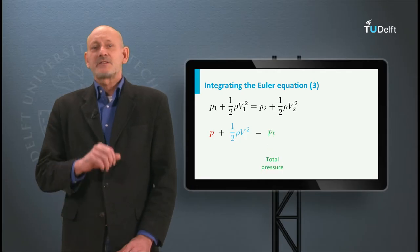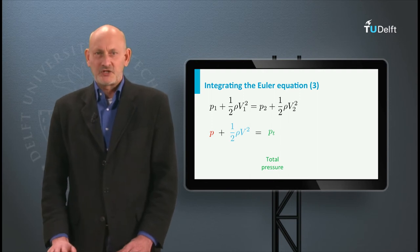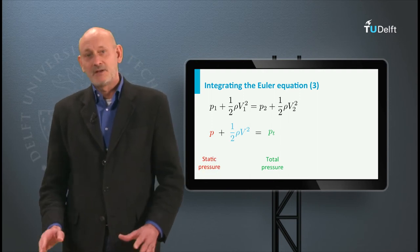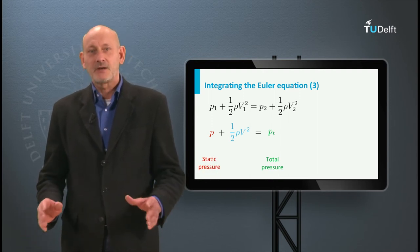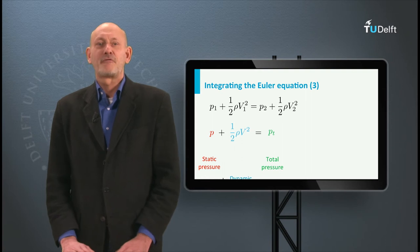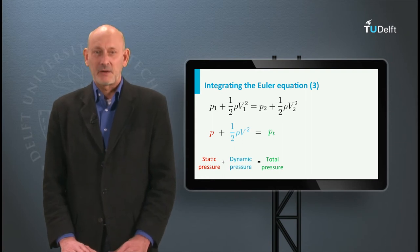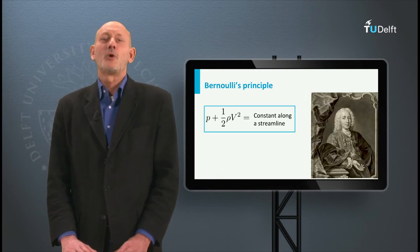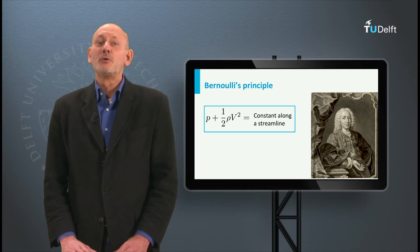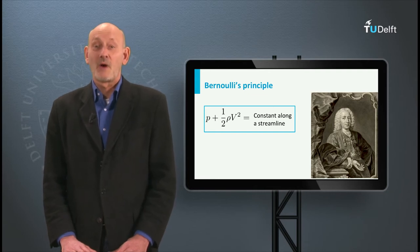This constant is called the total pressure Pt. P is the static pressure and ½ρV² is the dynamic pressure. This is known as Bernoulli's principle or Bernoulli's equation.